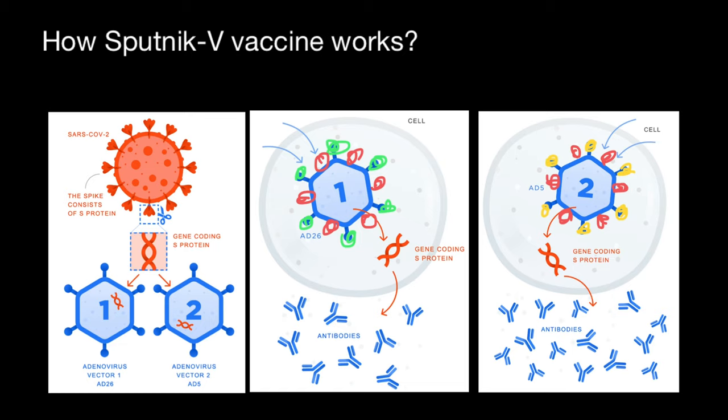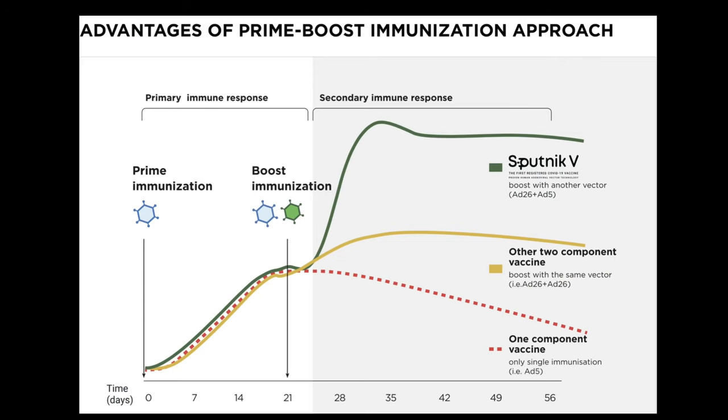And on the next slide, we will see and can compare different types of vaccines. This slide demonstrates advantages of prime boost immunization. This red line represents one component vaccine based on, for example, vector ad5, adenovirus 5, which we only apply once, so you get one shot. We call this prime immunization. Number of antibodies would grow fast for 21 days and then gradually decline.